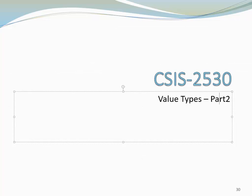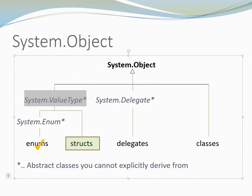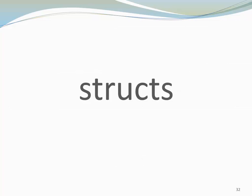Hi, this is part 2 of C-sharp value types. So far we talked about enums, which are value types, and now I want to talk a bit about structs.